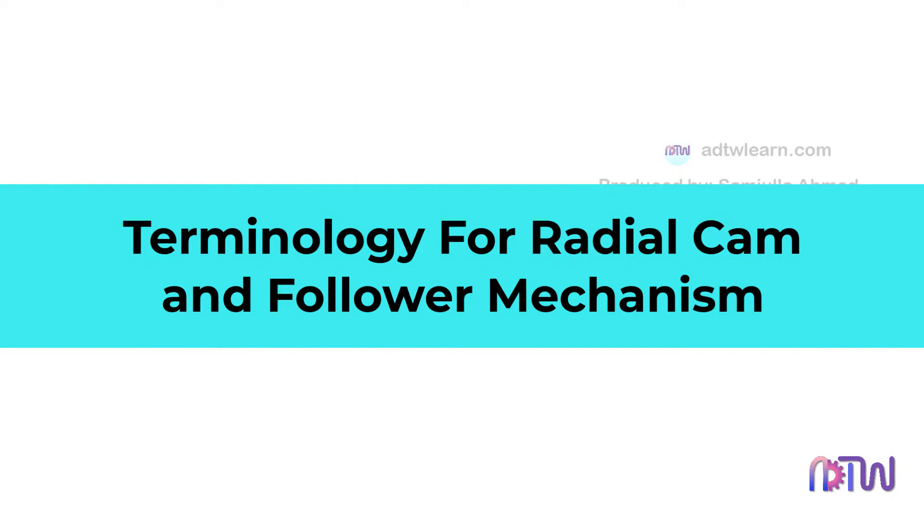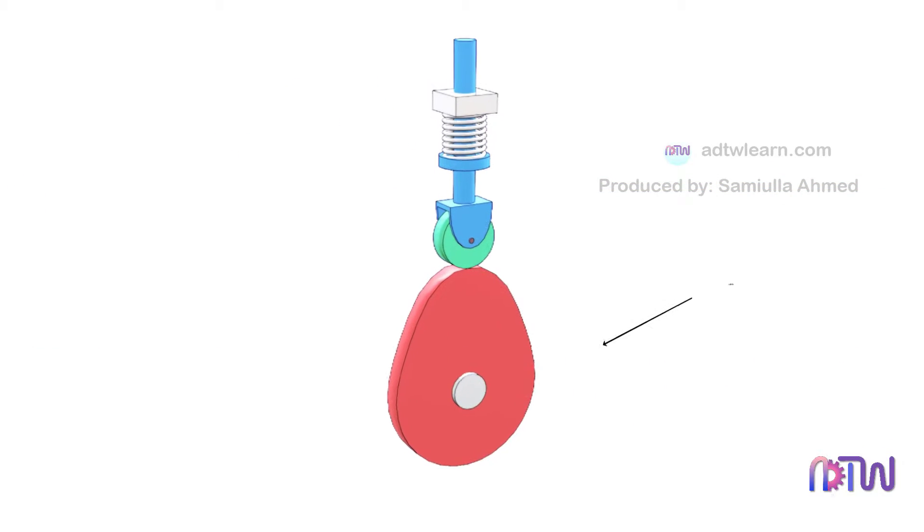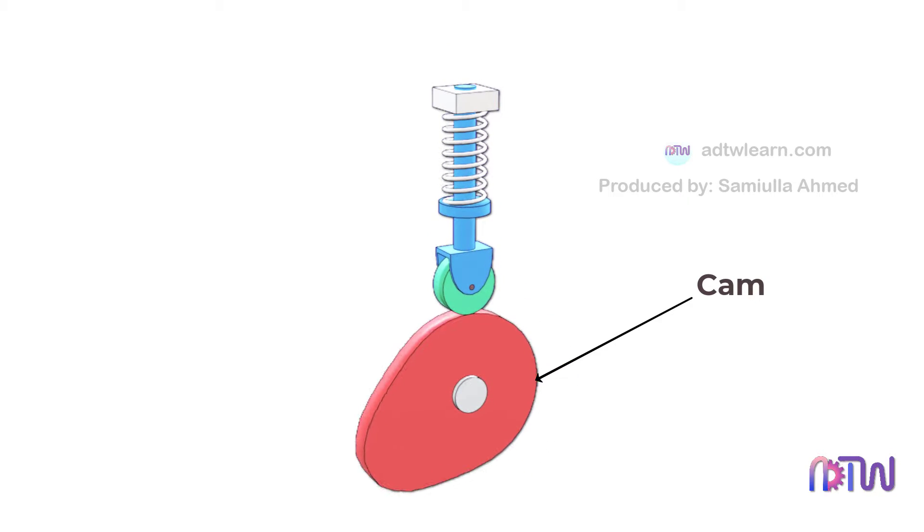Terminology for the Radial Cam and Follower Mechanism. A cam is a mechanical member used to provide desired motion or displacement to the follower by direct contact.